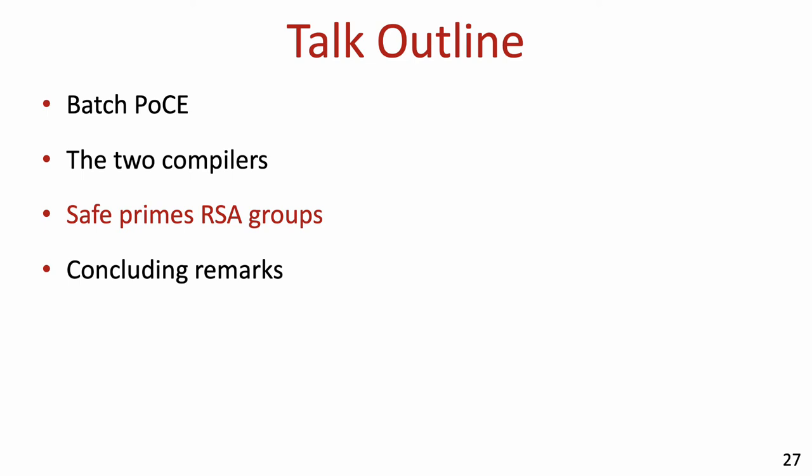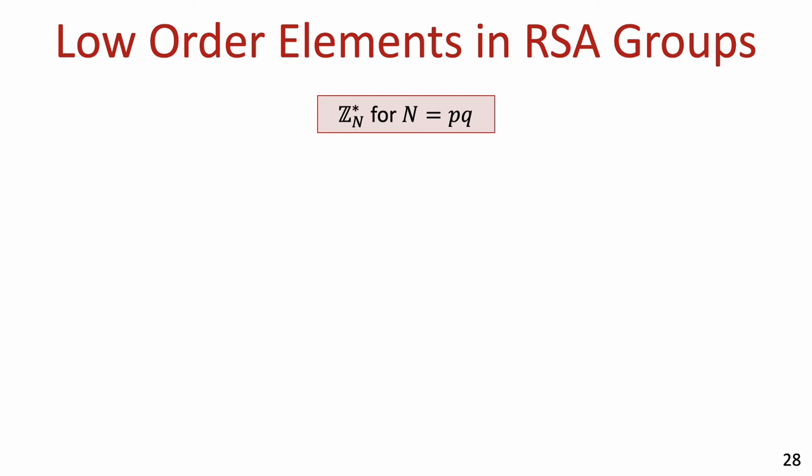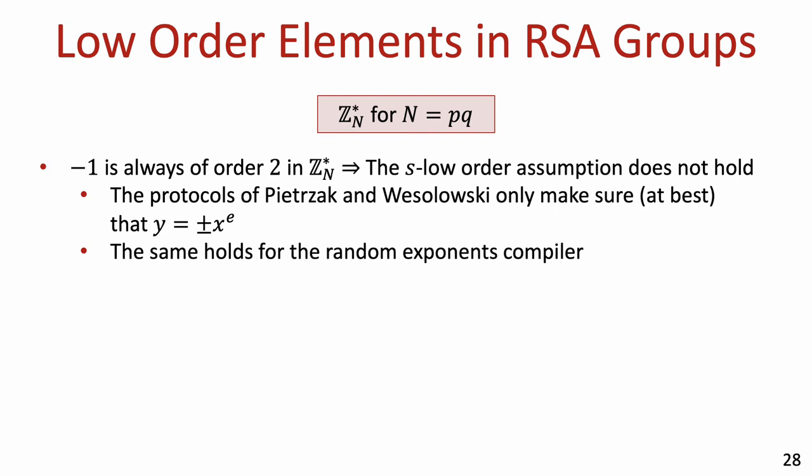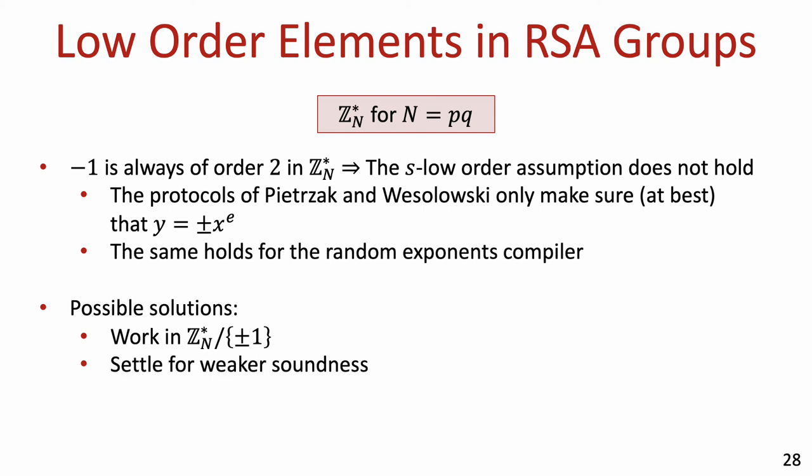Now let's discuss our protocols in safe prime RSA groups. We consider the RSA group Z_N* of integers modulo n, where n is the product of two primes p and q. Note that the s low-order assumption cannot hold in this group for any non-trivial value of s, since minus 1 modulo n is always an element of order 2. This is not just a proof issue — indeed the protocols of Pieczak and Weselowski can only guarantee that y equals plus or minus x to the e, and the same problem arises in the random exponents compiler.